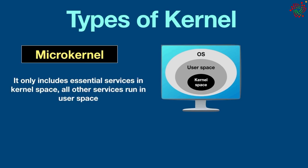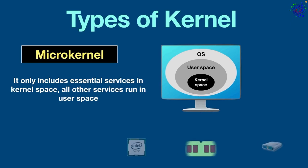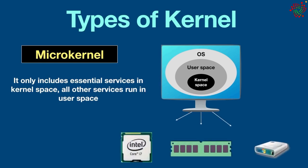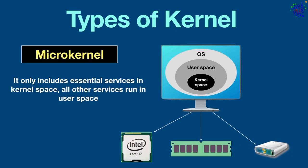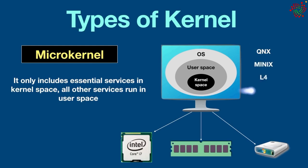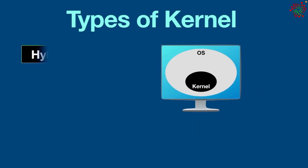Micro kernel: it only includes essential services in kernel space; all other services run in user space. This approach reduces the kernel size and improves system reliability. However, it results in slower communication between components due to the need for inter-process communication. Examples are QNX, MINIX, L4, and Hurd.